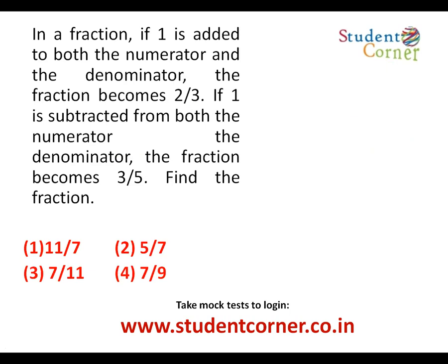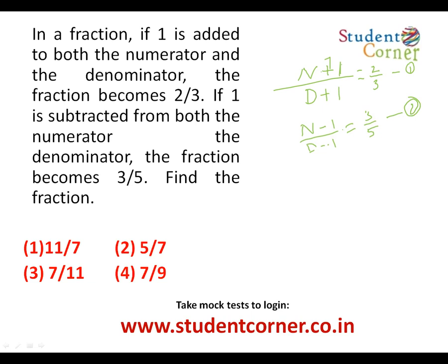Now for the fraction model. A fraction is a rational number p/q. Let the numerator be n and denominator be d. When 1 is added to both numerator and denominator, the fraction becomes 2/3. When 1 is subtracted from both, the fraction becomes 3/5. These are equations one and two.